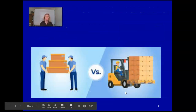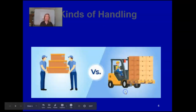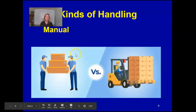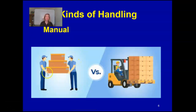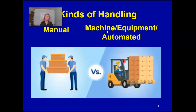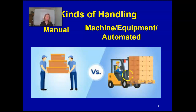There are two kinds of moving and handling: manual, where you're using your hands, or machine — sometimes called equipment handling or automated handling. Some kind of machine, auto, or robot handles the materials. Even so, it can be dangerous.